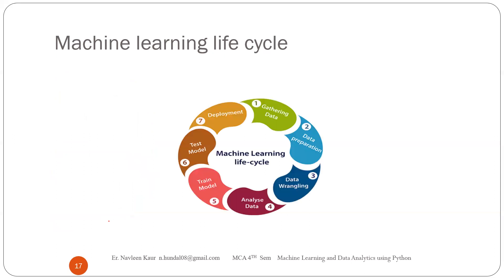These seven steps are: gathering data, data preparation, wrangling data, analysis of the data, train the model, test the model, and deployment — and it's a cycle. Your machine will not stop after deployment. As I told you, the GPS system — Google Maps — is a kind of app, a kind of machine. Every day when you are using it, you are feeding data into it, so it is getting data again. That's why it's a cycle — this process will keep going. It is again collecting data on its own, training the model, improving performance, and you are putting it back in the actual launch phase.